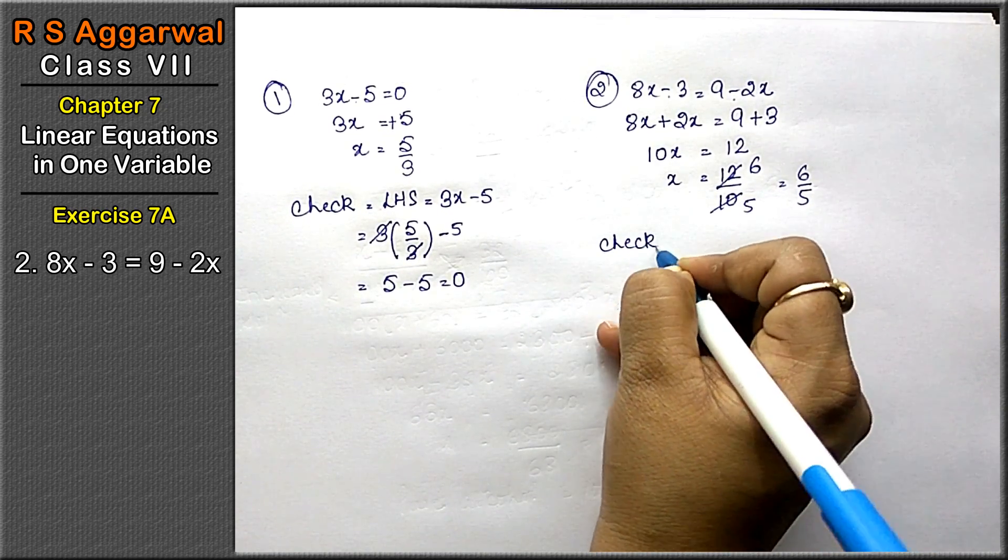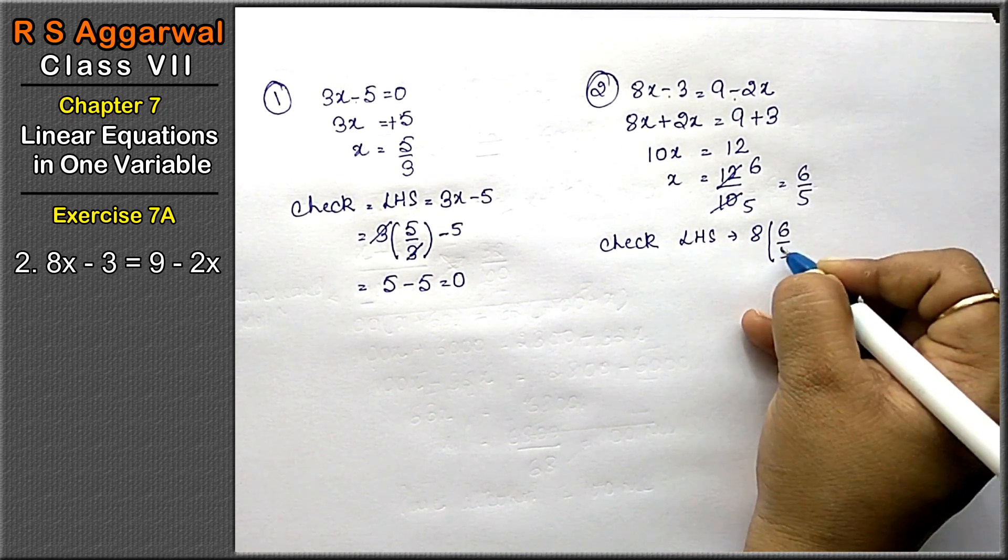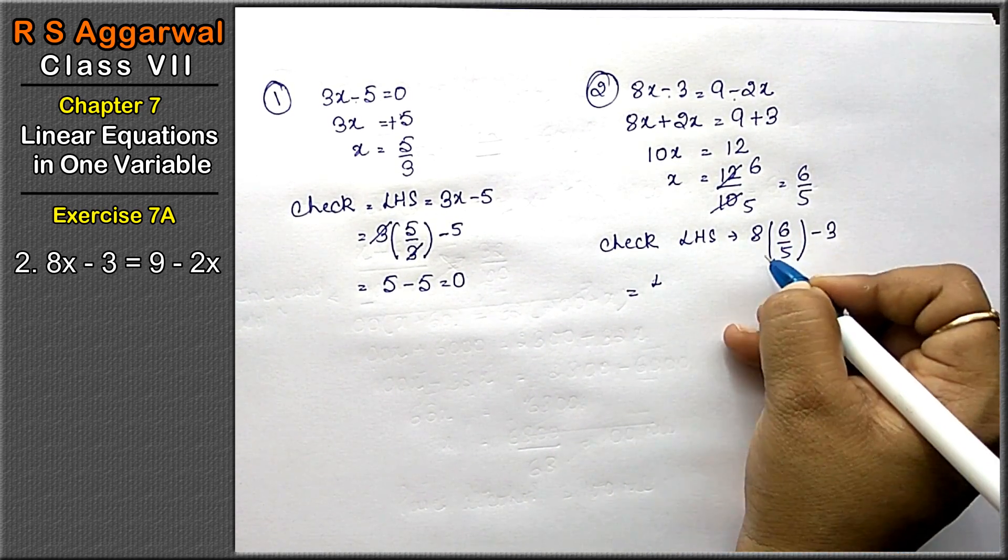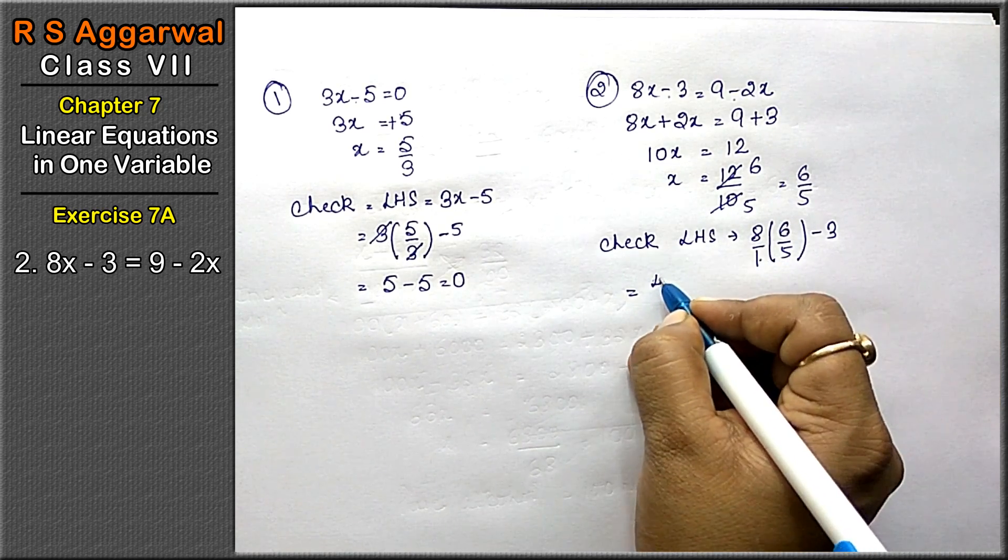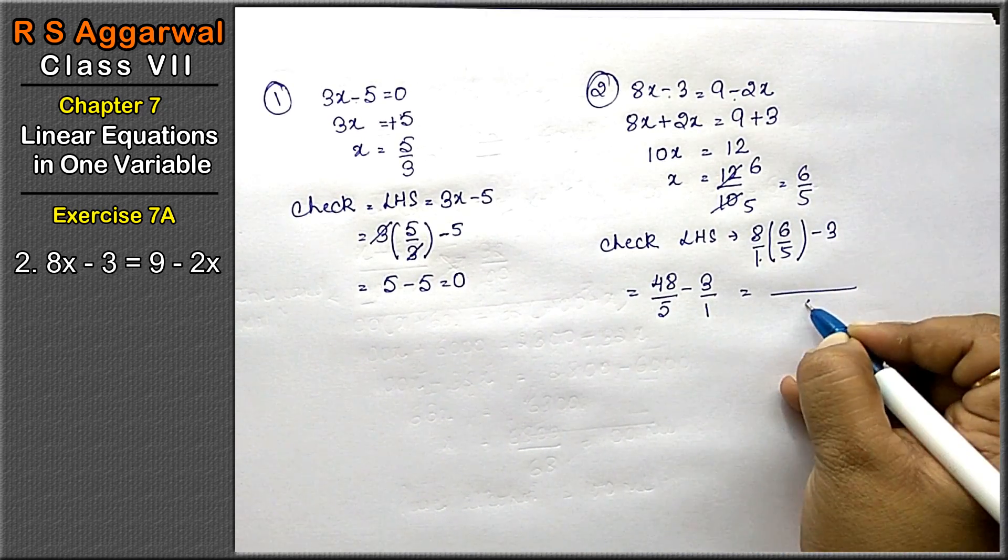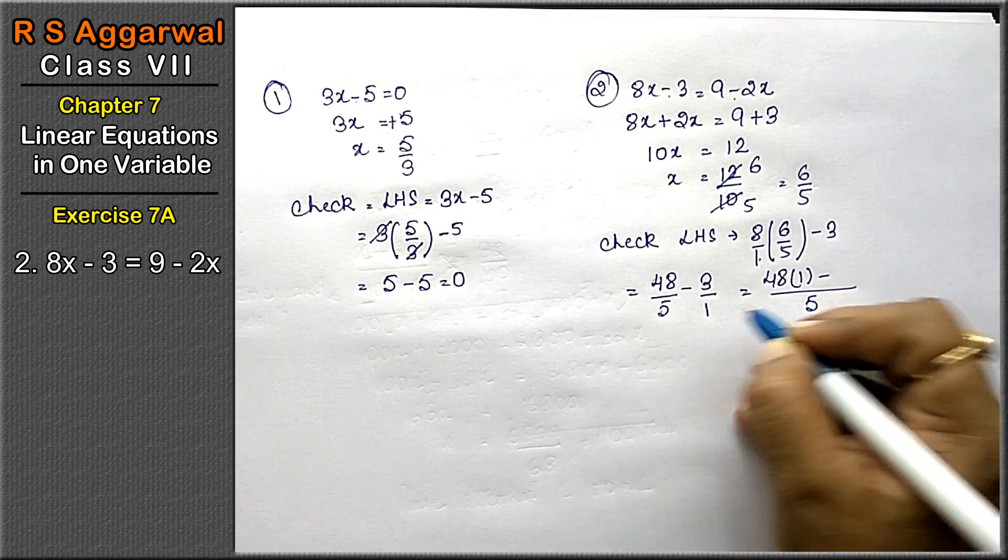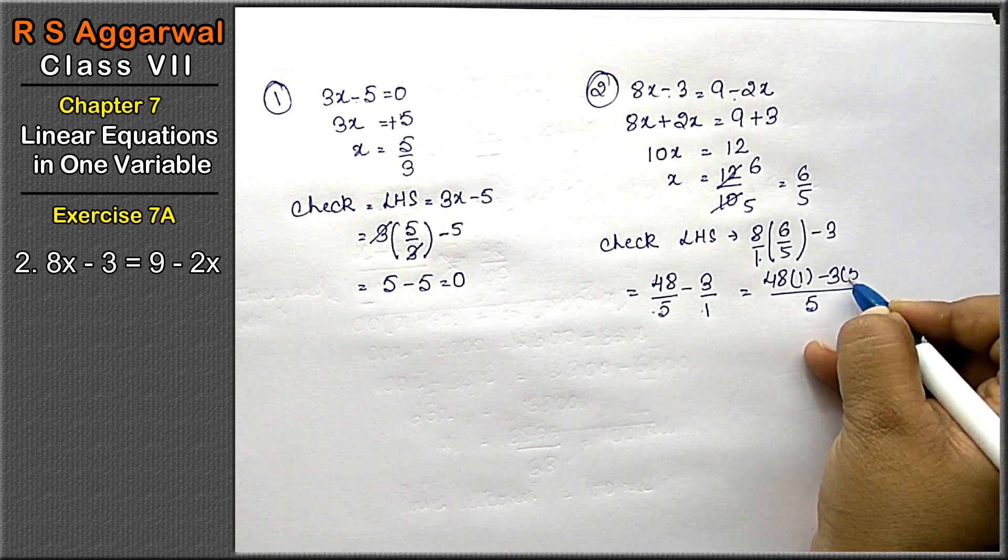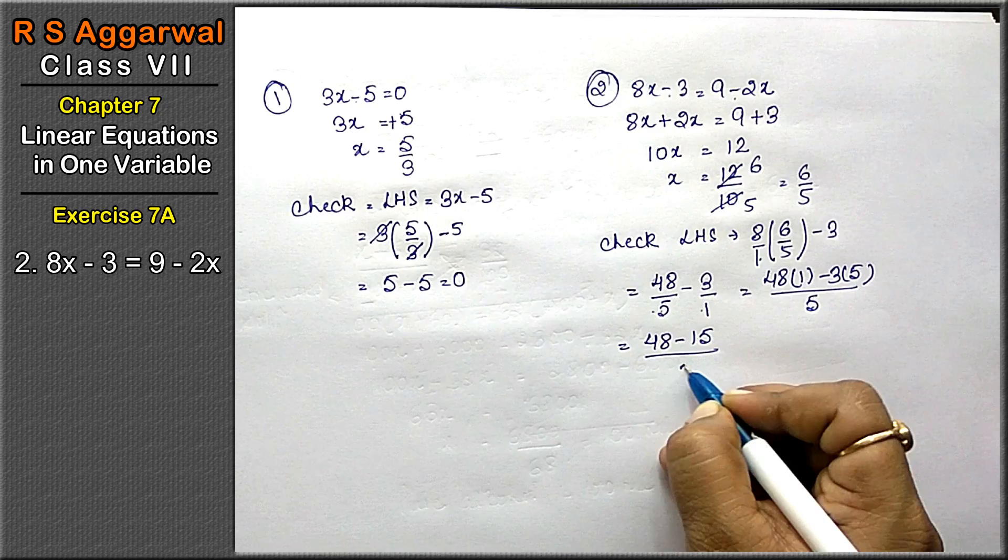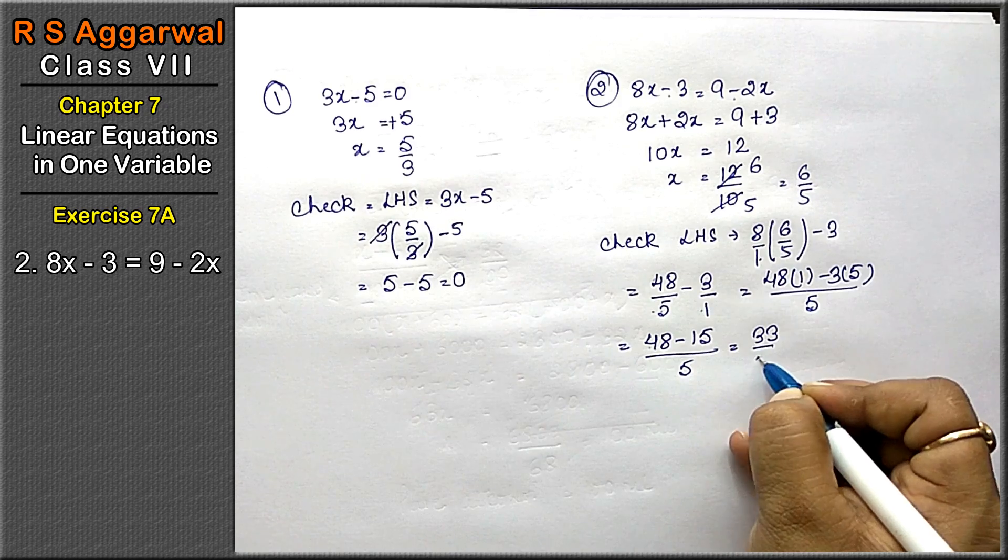Let's check. Left hand side is 8 into 6 upon 5 minus 3. Upper ki multiplication upper ke saath, neechi ki neechi ke saath. 8 × 6 is 48 upon 5 minus 3. Take LCM as 5: 48 minus 15 upon 5. 48 minus 15 equals 33 upon 5.